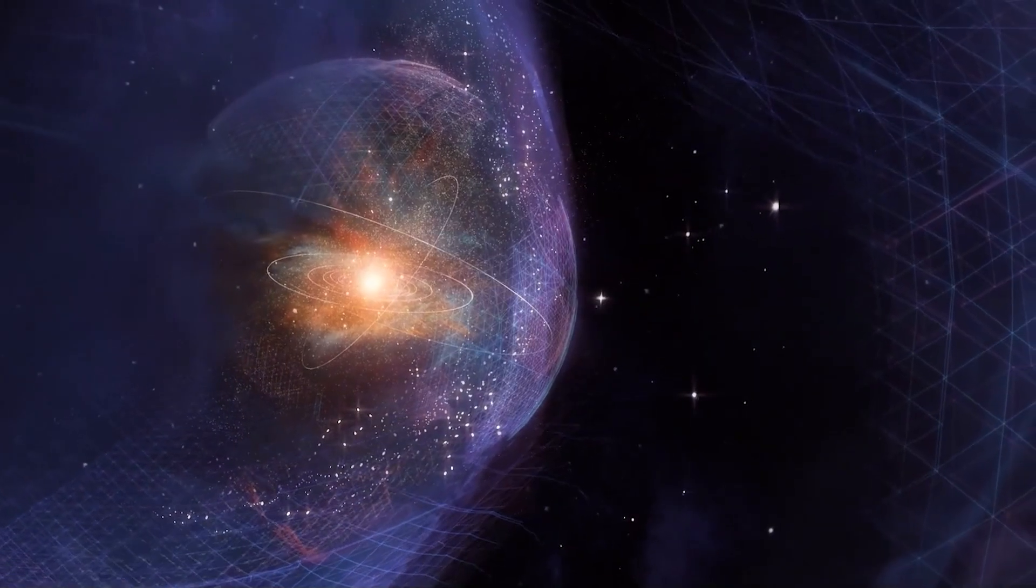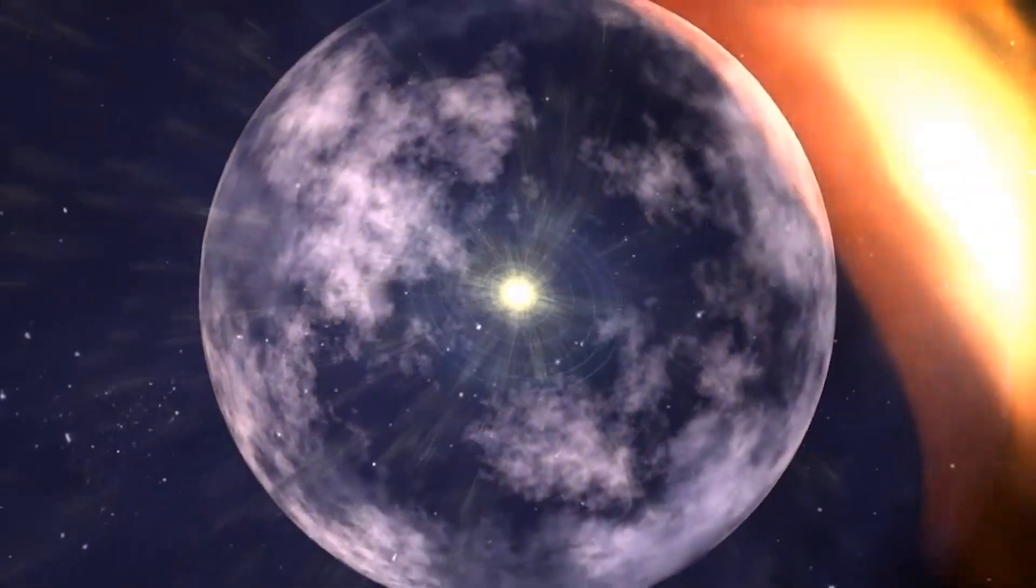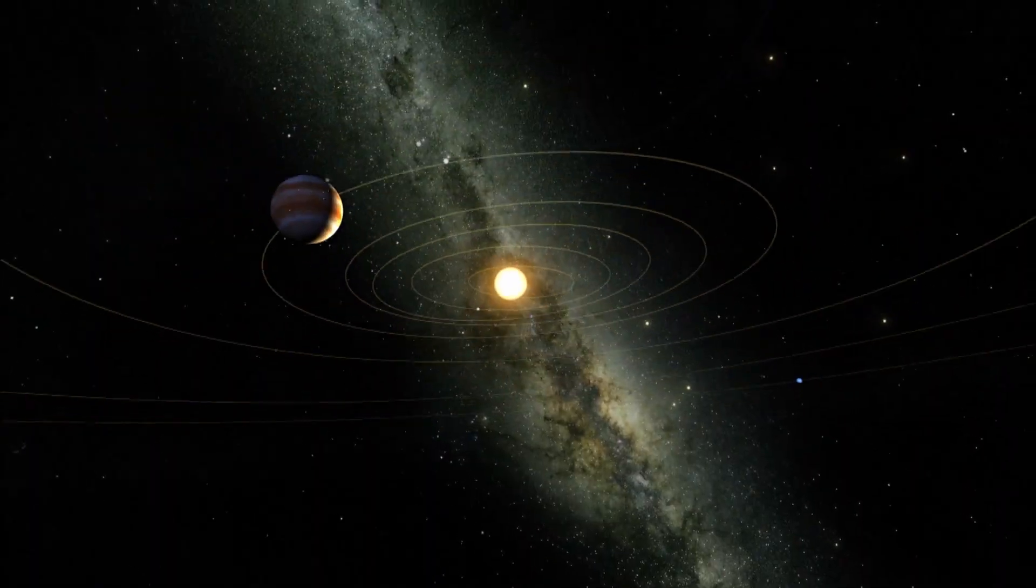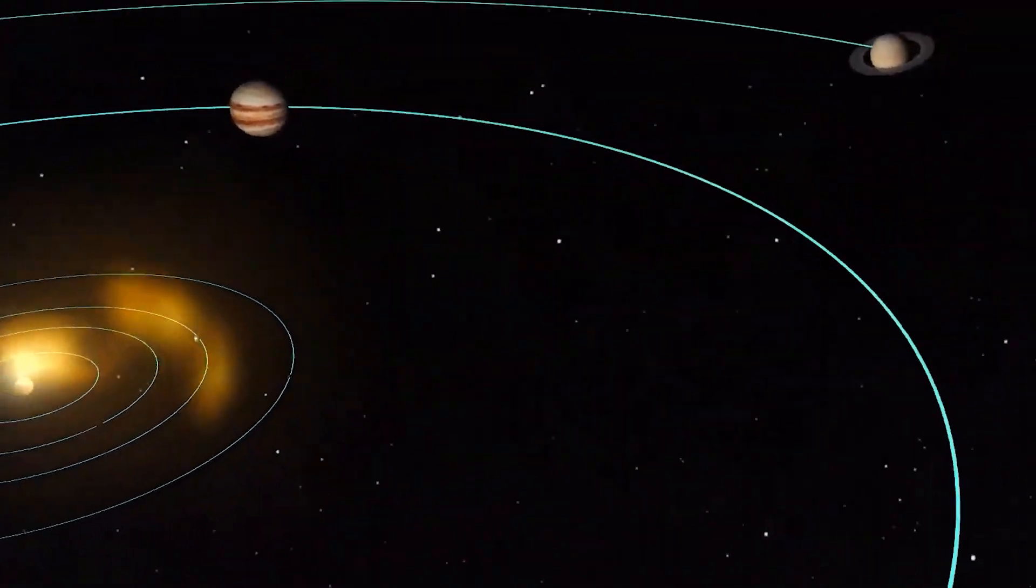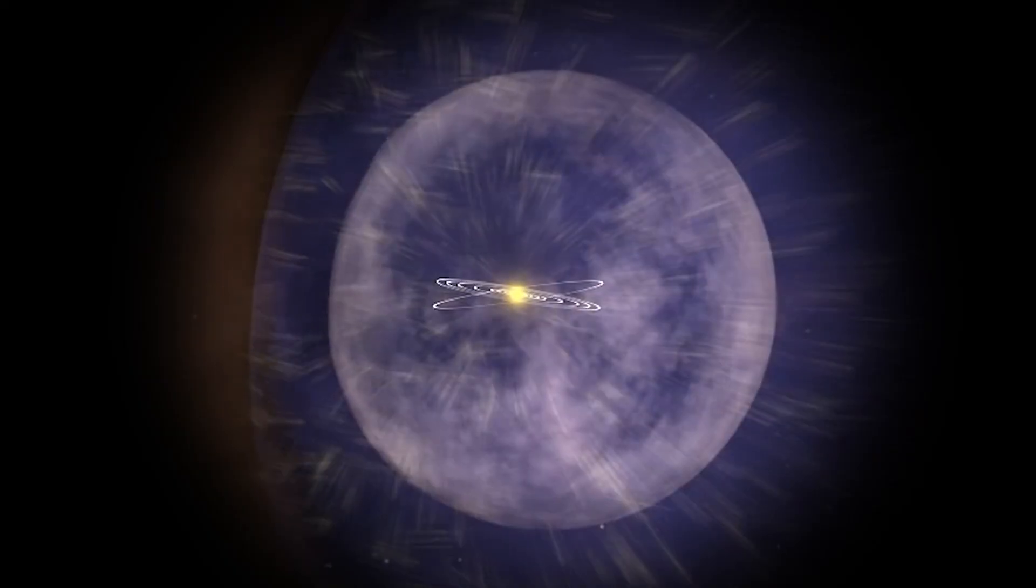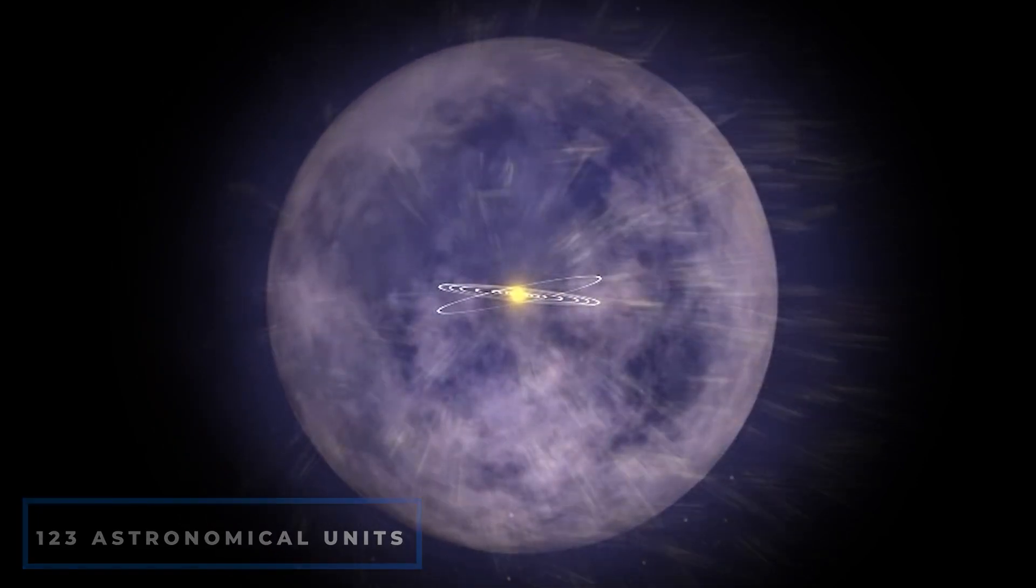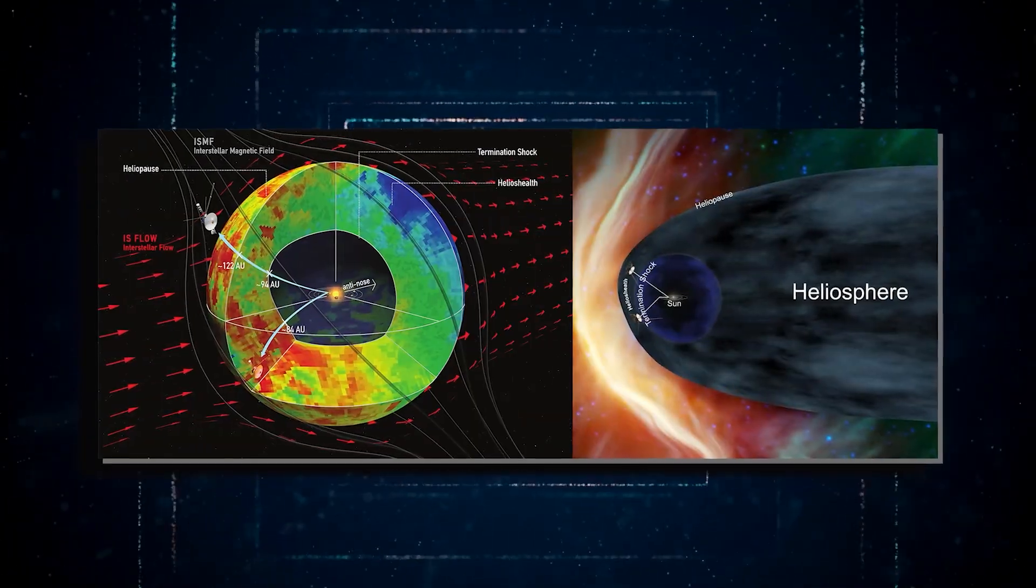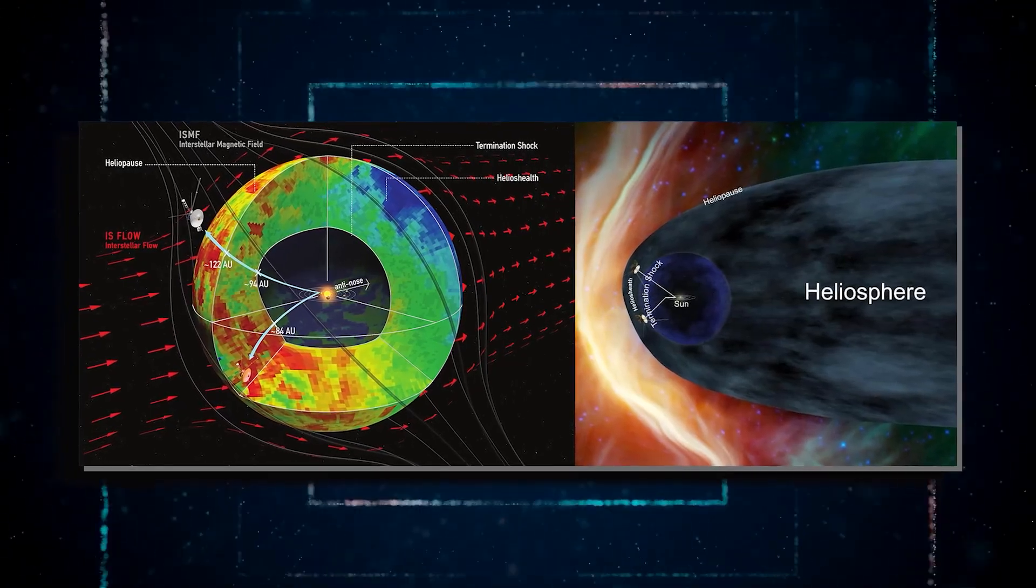Now let's turn our attention back to the heliopause. The heliopause is a boundary that demarcates the outermost region of our solar system. It signifies the point where the solar wind, a stream of charged particles emitted by the Sun, meets the interstellar medium. Positioned approximately 123 astronomical units away from the Sun, equivalent to an astonishing 11 billion miles, the heliopause is a remarkable distance from our star.